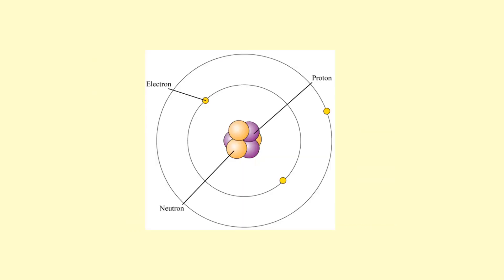There are also Newton's third law pairs in atomic systems. For example, the electron is attracted towards the proton with some force, and the proton is attracted towards the electron with an equal and opposite force. Another pair: one proton is repelled by another proton, and there is an equal and opposite force on that other proton as well.